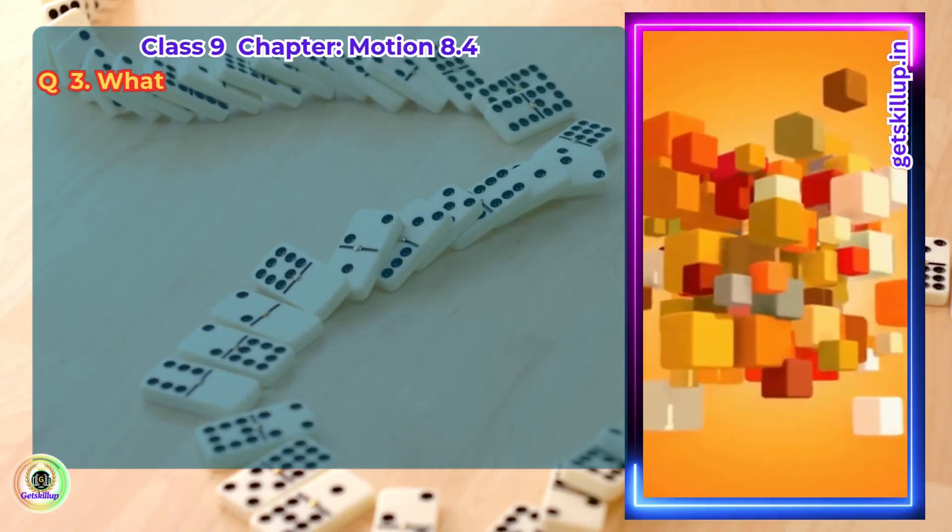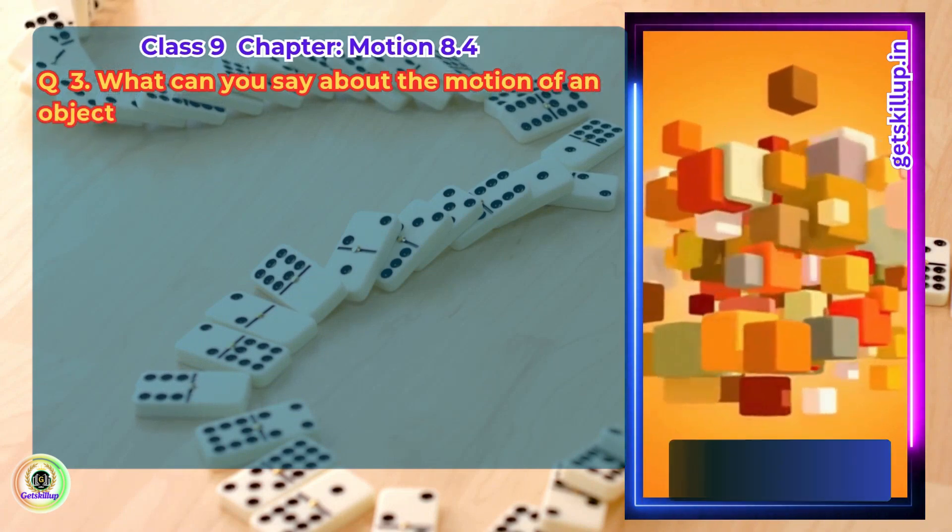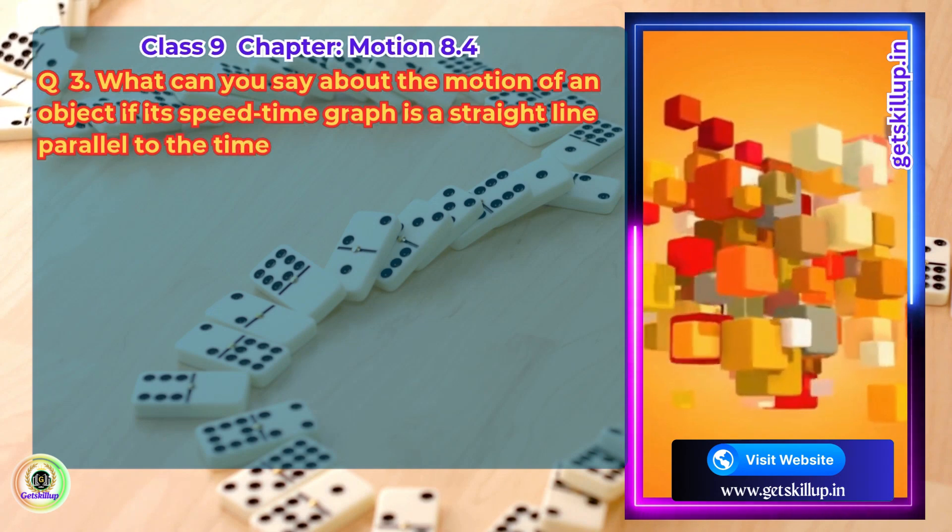Question 3. What can you say about the motion of an object if its speed-time graph is a straight line parallel to the time axis?